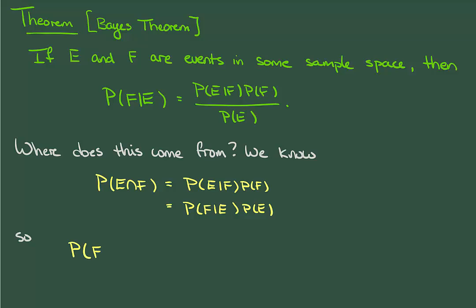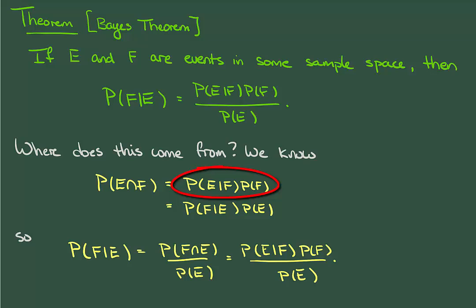So let's plug this into our conditional probability equation. Now for Bayes' theorem, we're going to use the top equation, but you should try plugging in the bottom equation just to see what happens. But there we have it. Plugging in the top equation gives us Bayes' theorem.